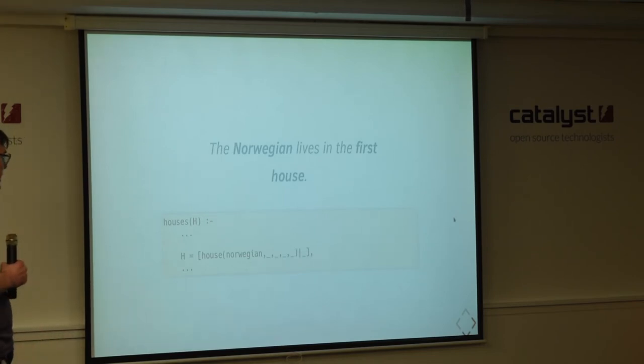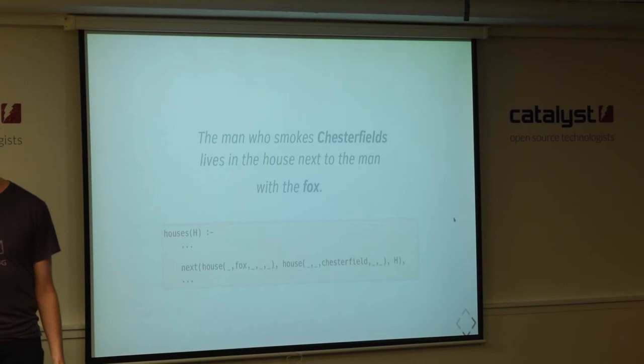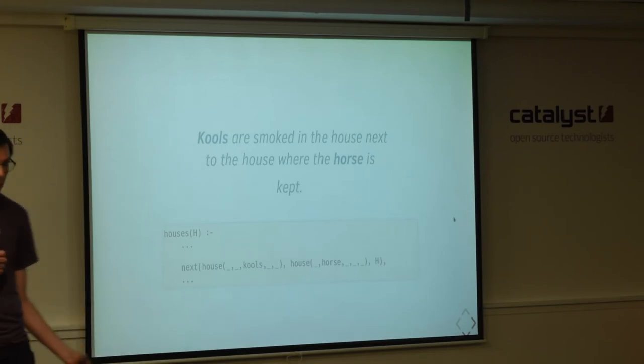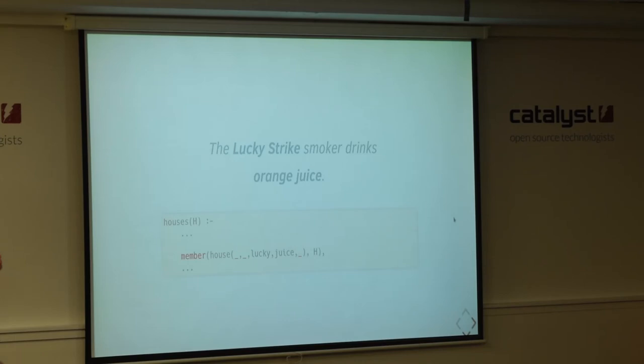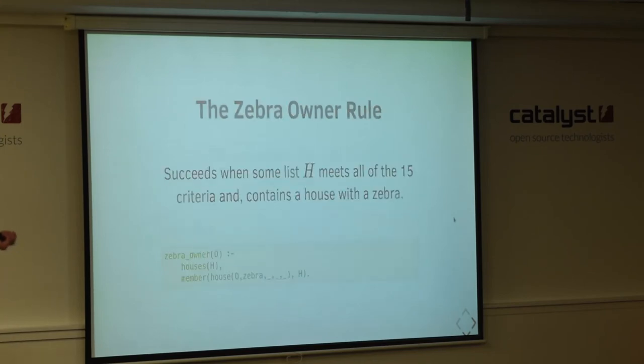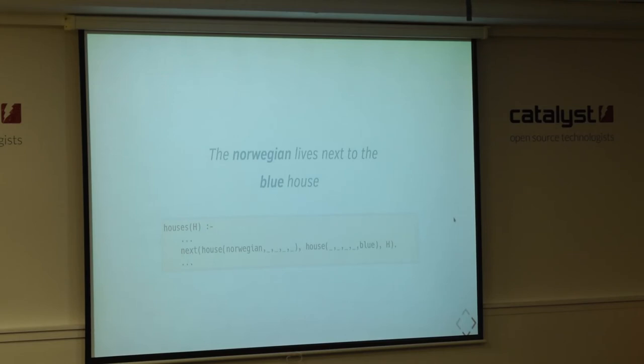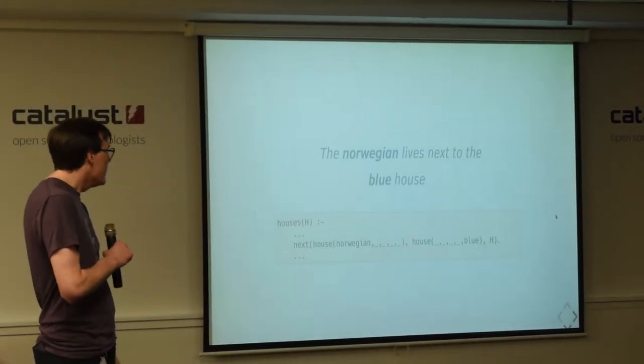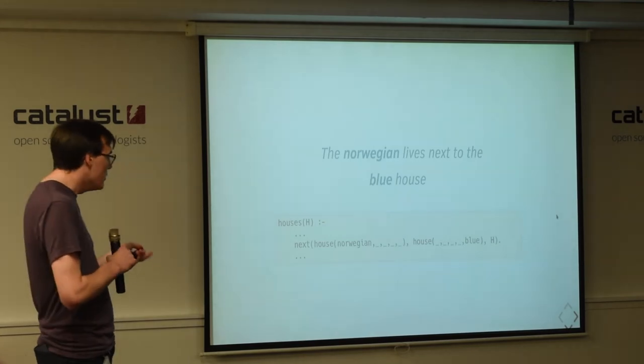The Norwegian lives in the first house. So, here we see an application of our H bar R notation where all we want to say is that the first house in the list is a house where the Norwegian lives. And we don't care about the rest of the properties of the house. We don't care about what else is in the list. We're just deciding that the list H must look like this. So, another constraint where houses are next door to each other. Coors are smoked in the house next to the house for the horse's kept. This one was a bit harder to read, a lot easier to write in prologue. So, we've got a few more of these. And that's it.